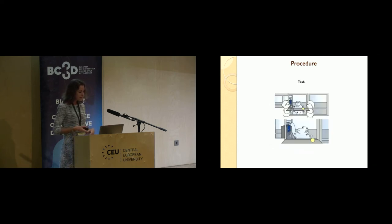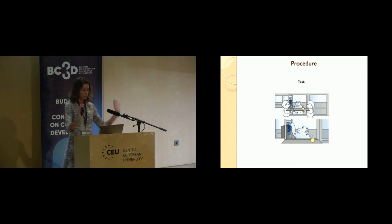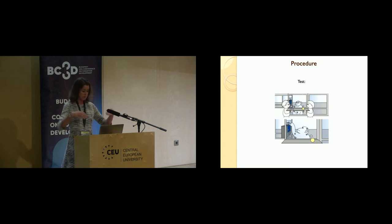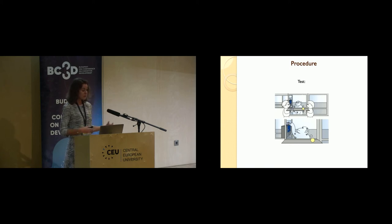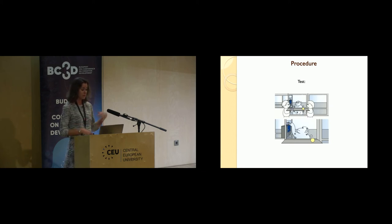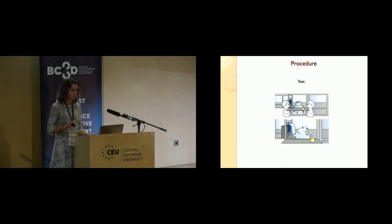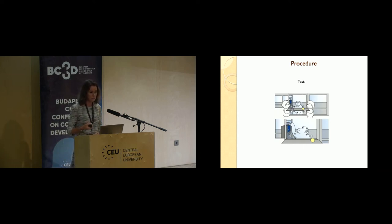At test, both objects were placed on a tray and pushed toward the ape. At this point neither demonstrator made eye contact—they looked down. The ape could then choose between the two objects. After choosing, we gave them the chosen object, and depending on whether they chose the efficient or inefficient object, the device either activated or not. They were only rewarded if they chose the efficient object.